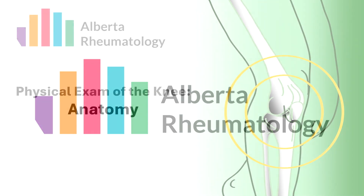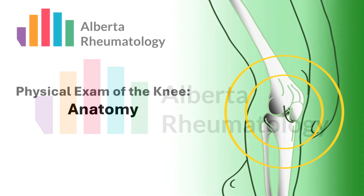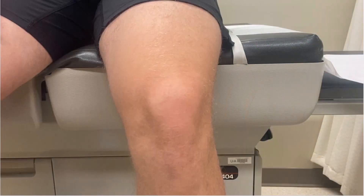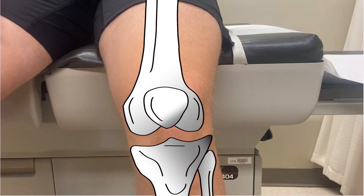In this video series we will demonstrate the components of a rheumatology knee exam, beginning with a brief overview of knee anatomy. The knee consists of four bones: the femur proximally, the tibia and fibula distally, and the patella floating anteriorly.